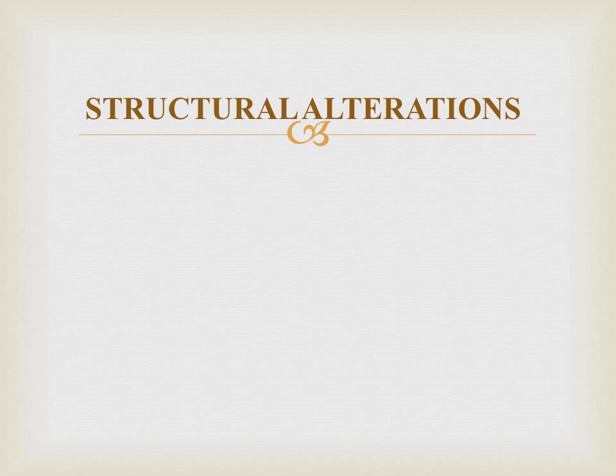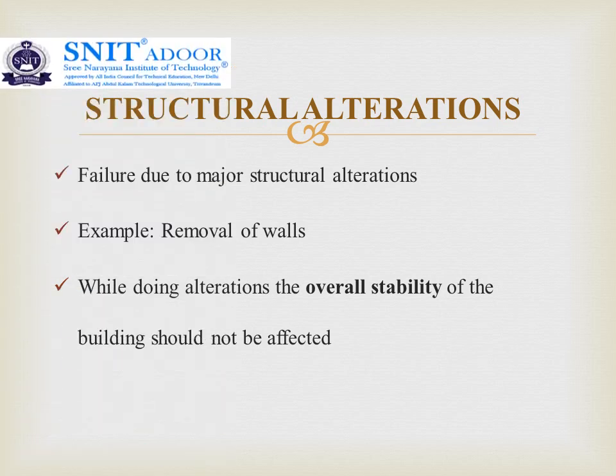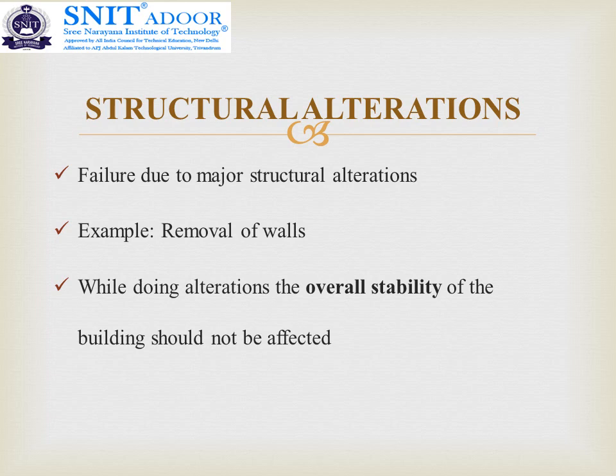Next is structural alteration. These are regarding the various alterations we make in our buildings, for example the removal of walls, replacement of doors, windows, etc. When walls are removed, the columns or load-bearing members need to carry additional loads, thus leading to the failure of the load carrying member. While doing alterations, the overall stability of the building should not be affected. Alterations should be made with proper consideration of the overall stability and symmetry of the building, ensuring its entire safety and protecting it from failure.